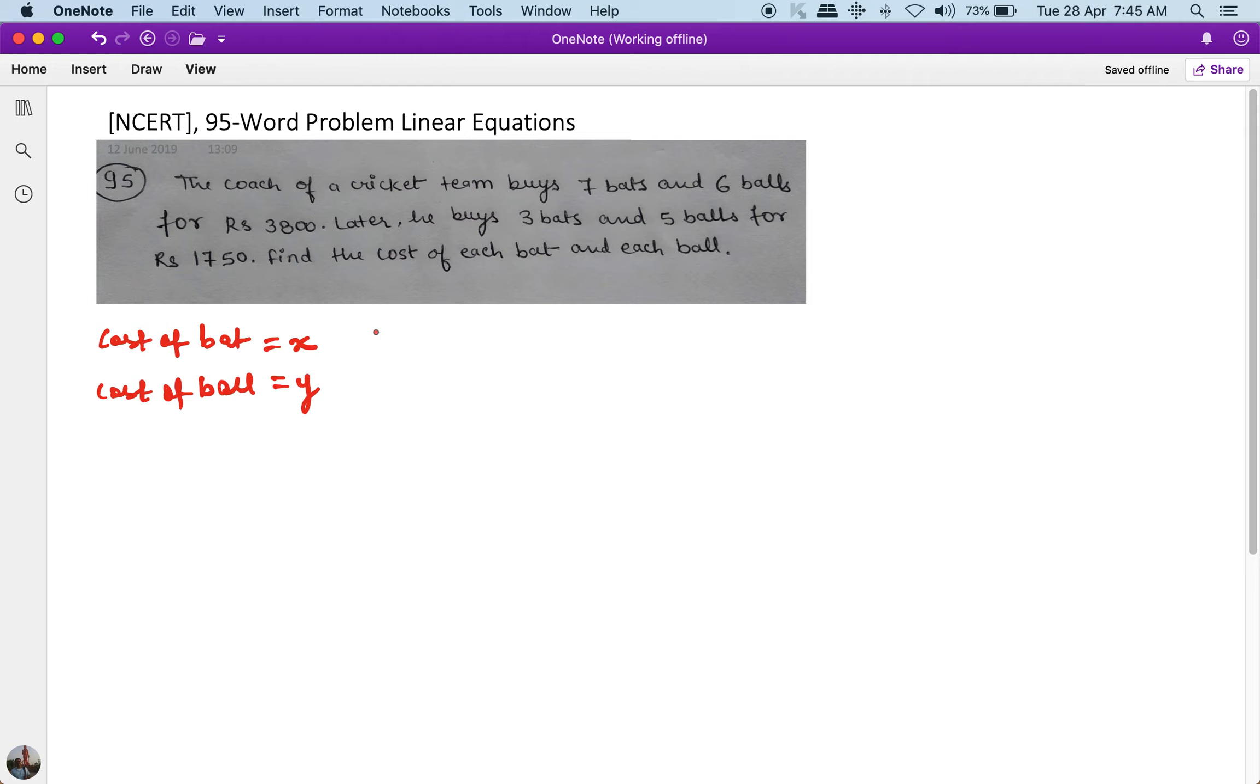Now it says seven bats and six balls for 3800, so 7x plus 6y equals 3800. This is my condition one, C1: 7x plus 6y equals 3800. And condition two, C2, is three bats plus five balls equals 1750, so 3x plus 5y equals 1750.